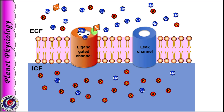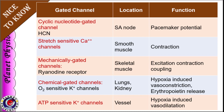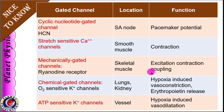Here is a table showing other gated channels. Cyclic nucleotide gated channels, like the hyperpolarization-induced cyclic nucleotide gated channel (HCN), are found in the SA node and are responsible for sodium influx leading to generation of pacemaker potential. Stretch sensitive calcium channels are commonly found in smooth muscles and cause sodium influx leading to muscle contraction. Mechanically gated channels like ryanodine receptors in cisterns of skeletal muscle release calcium and play an important role in excitation-contraction coupling. Chemical gated channels like oxygen-sensitive potassium channels are found in lungs (concerned with hypoxia-induced vasoconstriction) and in kidneys (causing release of erythropoietin). ATP-sensitive potassium channels are responsible for hypoxia-induced vasodilation in systemic circulation.